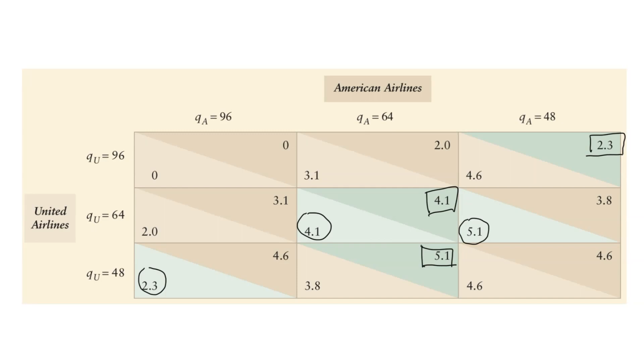First, we determine each firm's best response to any given strategy of the other firm. Second, we determine if any pairs of strategies are best responses for both firms, so that the pair of strategies is the Nash equilibrium. Both firms choose the quantity of 64. It's a Nash equilibrium because given that its rival uses this strategy, neither firm wants to deviate from its strategy.